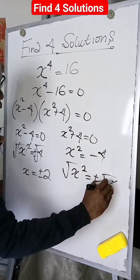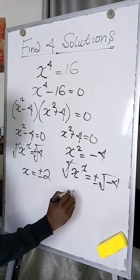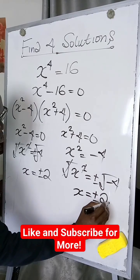This gives us x equal to plus or minus 2i. So we have four solutions to this expression.